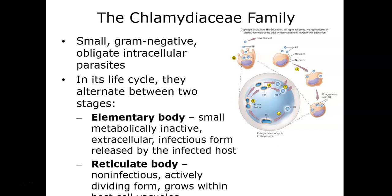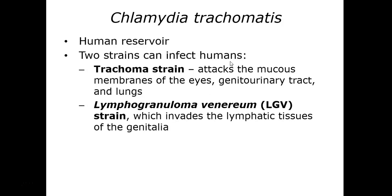The chlamydias are small, gram-negative intracellular parasites that alternate between two different forms: the metabolically inactive elementary body, and the active reticulate body, which grows within a host cell vacuole. Chlamydia trachomatis is the major member of this group. Two strains can infect humans: the trachoma strain, which targets mucous membranes of the eyes, genitourinary tract, and lungs; and the LGV (lymphogranuloma venereum) form, which invades the lymphatic tissues of the genitalia.